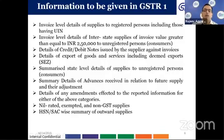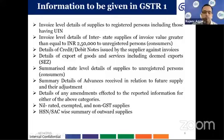Regarding HSN-wise detail requirements: taxpayers with total clearances less than Rs. 1.5 crores need not give any HSN-wise detail; between Rs. 1.5 to 5 crores, two-digit HSN is required; above Rs. 5 crores, four-digit HSN details must be given. Additionally, the taxpayer must provide invoice serial number ranges — from which number to which number invoices were issued during the month — and the number of invoices cancelled.